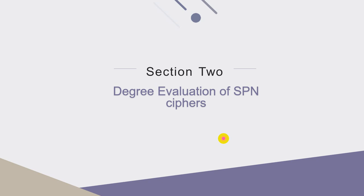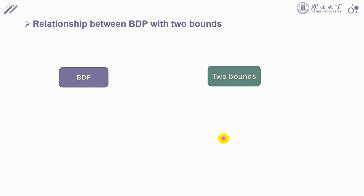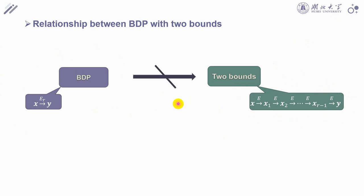Let us first focus on the SPN ciphers. From above introduction, we know the BDP is a whole process, and the two bounds is an iterative process when estimating the degree of SPN method. So we cannot compare them straightforwardly. So we have to construct a bridge to link them.